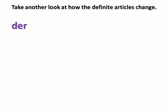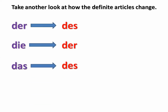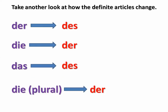Let's take a look at how the definite articles change in the genitive. Der words, or masculine words, will change to 'des.' Die words will change to 'der.' Das words will change to 'des.' And if it's plural, such as 'die,' then it will change to 'der.'